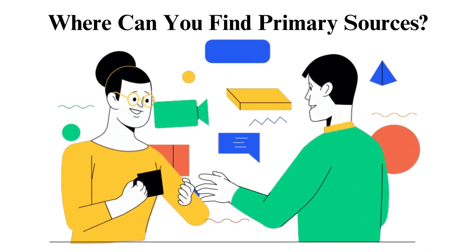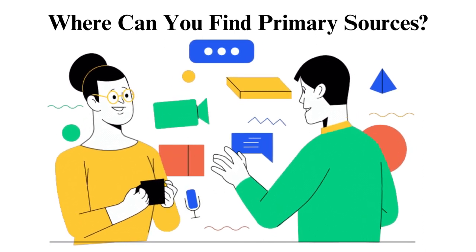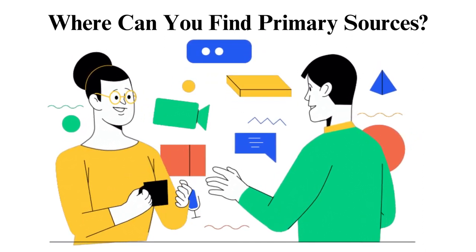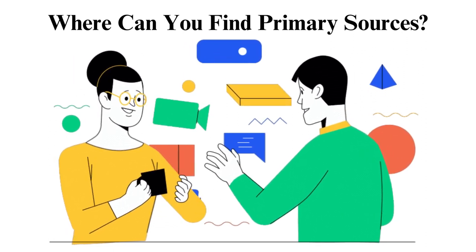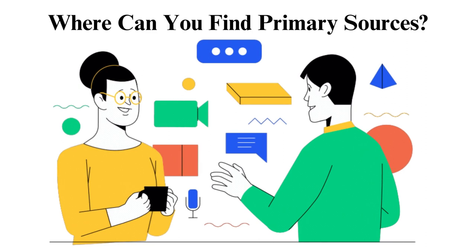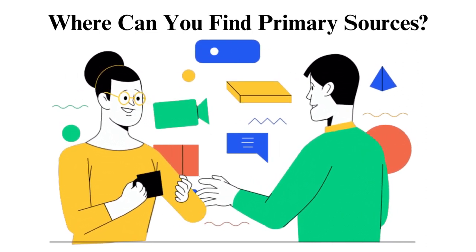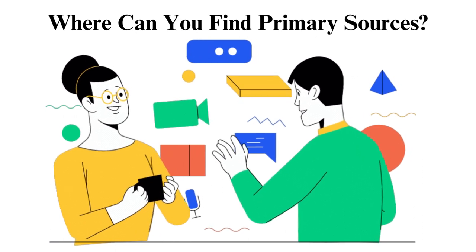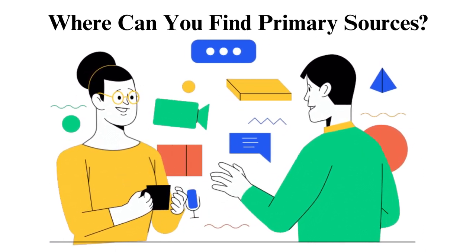These institutions usually keep pictures, letters, diaries, artwork, and other original works and preserve them for the public. They also scan the materials to make them available on the web. Therefore, you can access these documents in the Library of Congress or American Memory. Government agencies and NGOs mostly keep statistics and data sets and you can always inquire from them.